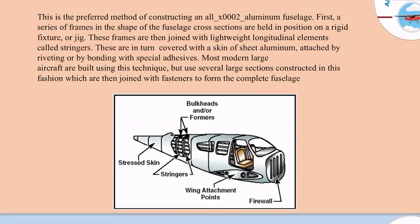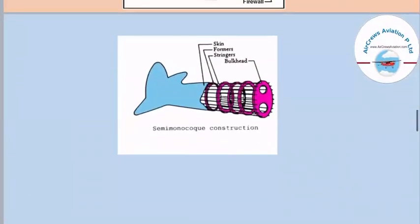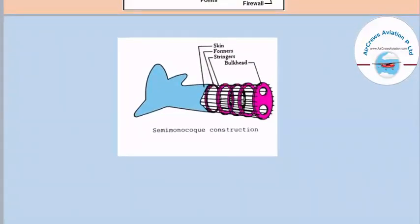Different parts of the semi-monocoque fuselage include: at the nose and front area — a firewall, then wing attachment points where wings are attached, stringers forming the longitudinal internal structure, bulkheads also known as formers, and the outer covering skin known as the stretched skin. In this picture we can see the bulkheads, stringers, formers, and skin clearly.